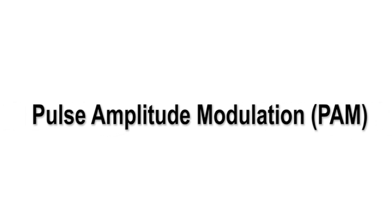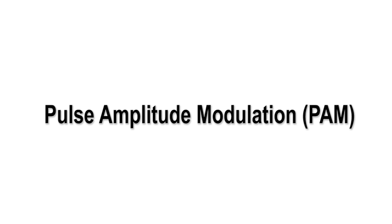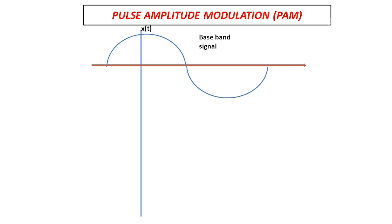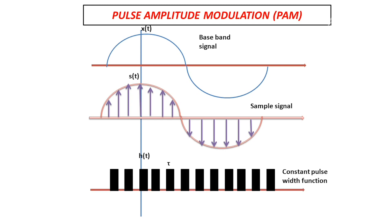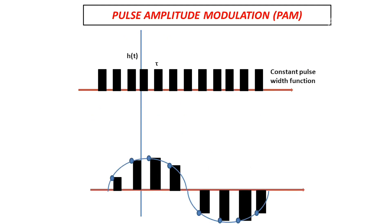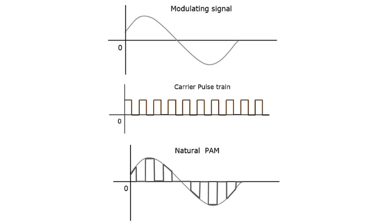Pulse amplitude modulation. In pulse amplitude modulation technique, the amplitude of the pulse carrier varies, which is proportional to the instantaneous amplitude of the message signal. The pulse amplitude modulated signal will follow the amplitude of the original signal as the signal traces out the path of the whole wave. In natural pulse amplitude modulation, a signal sampled at Nyquist rate can be reconstructed by passing it through an efficient low-pass filter with exact cut-off frequency.